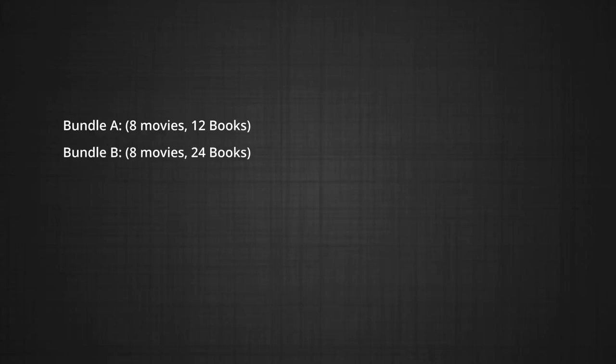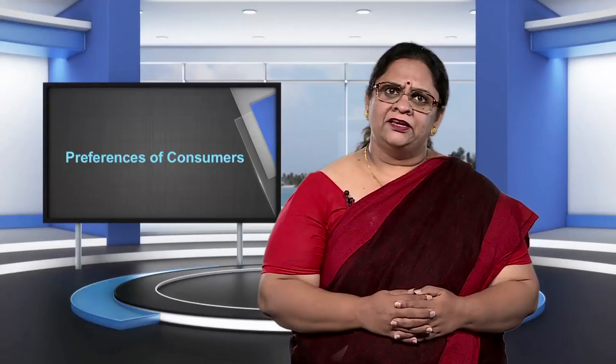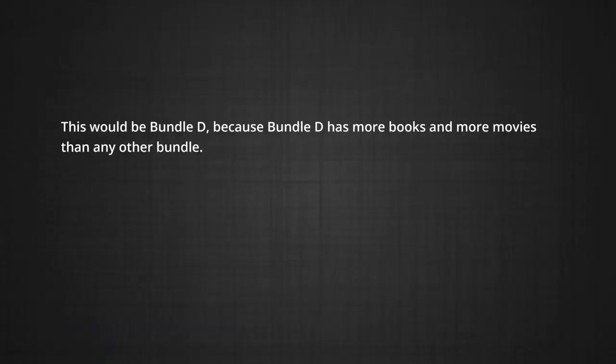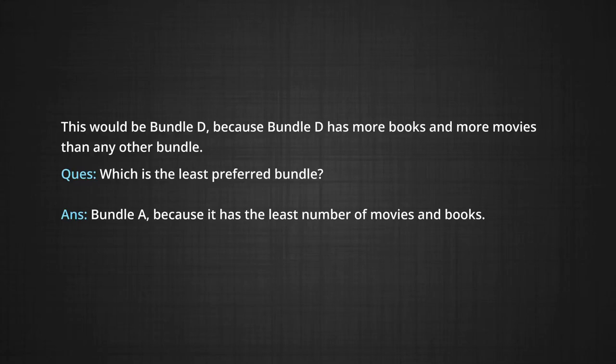Let us go back to the bundles of movies and books we were examining in the module on budget constraints. Bundle A contains 8 movies and 12 books. Bundle B contains 8 movies and 24 books. Bundle C has 16 movies and 16 books. Bundle D has 24 movies and 24 books. Bundle B has more books and the same number of movies as bundle A, so naturally I choose bundle B over bundle A. Clearly, the most preferred bundle is D, because it has more books and more movies than any other. And bundle A is the least preferred, as it has the least number of movies and books of all four bundles.